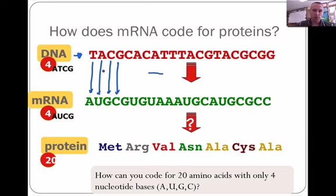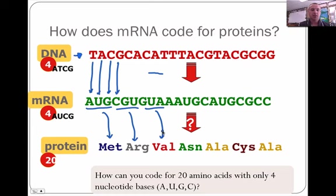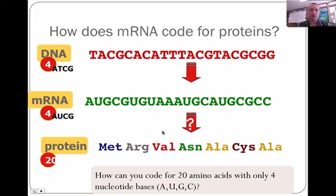What we will do is look at how AUG will turn into methionine, CGU will turn into arginine, GUA will turn into valine, etc. Now, there are 20 different amino acids and only four nucleotide bases that code for them.